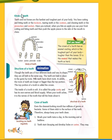Kinds of Teeth. Let's see what are the different kinds of the teeth. Teeth and bones are the hardest and toughest part of your body. You have cutting and biting teeth, or the incisors; tearing teeth, or the canines; and chewing teeth, or the premolars and the molars. So these are the four types of the teeth.